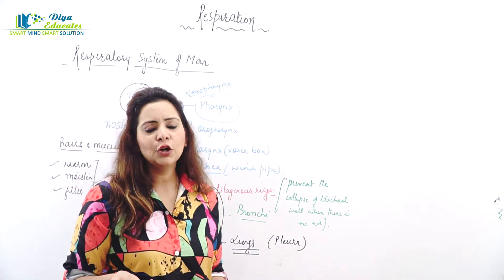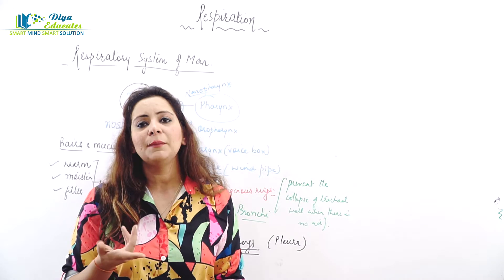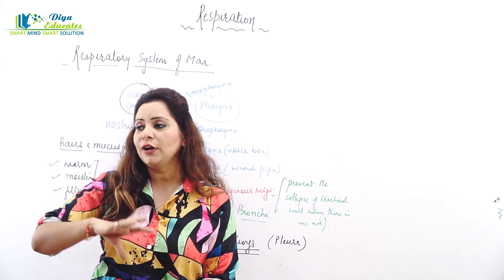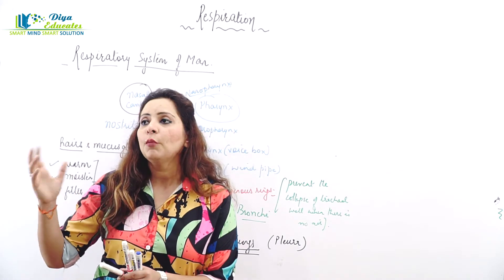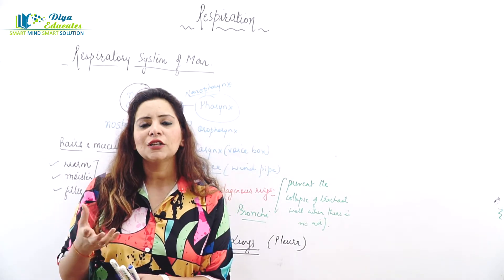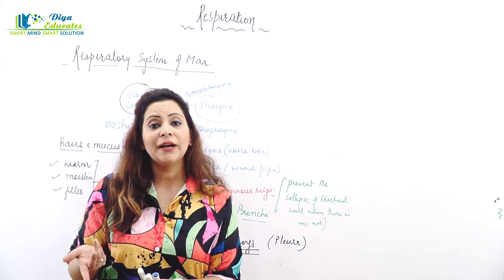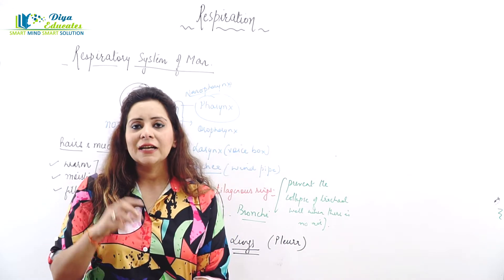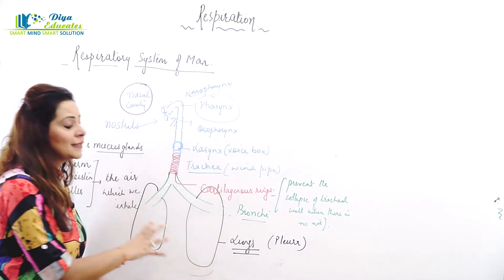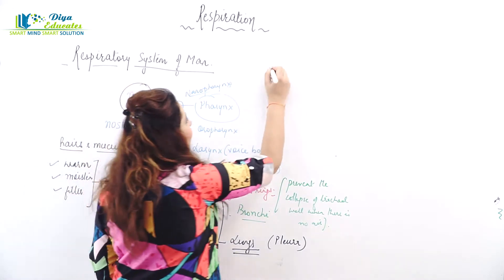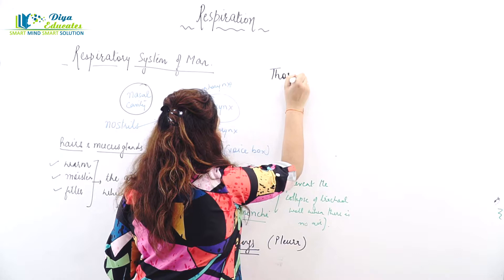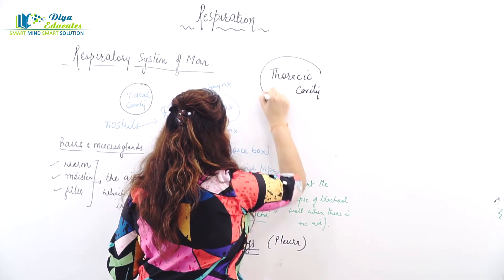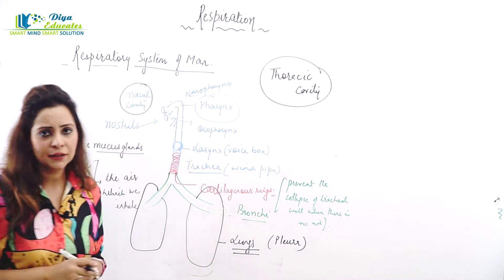When a very small child is born, the lungs are a very baby-pink color. But if you compare those lungs with a very adult and heavy smoker, the lungs become blackish-red due to accumulation of pollutants. The lungs are located in a cavity called the thoracic cavity.